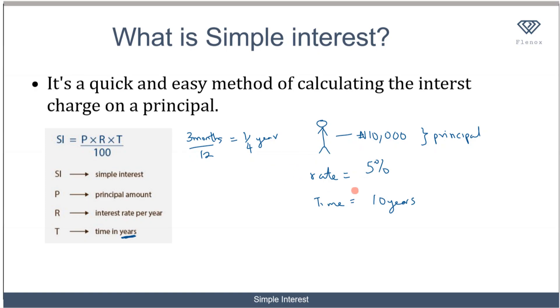Let's work out what this should be. The simple interest in this case is equal to the principal, which is 10,000, times the rate, which is 5%, times the time, which is 10 years, over 100. This equals 5,000 naira.